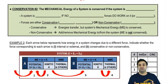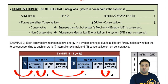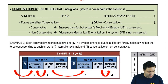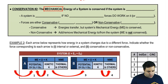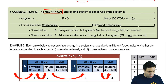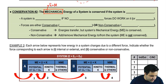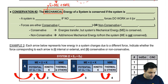The first rule of conservation of energy had to do with the total energy of the system. The second one has to do with just the mechanical energy of a system. Remember, the total energy is made up of mechanical energy and non-mechanical energy, and we're now going to talk about this one.